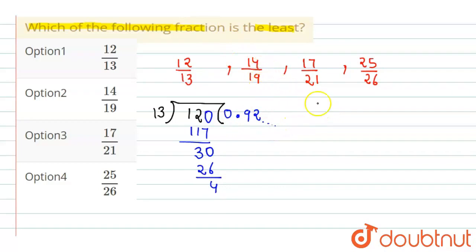The second option is 14 upon 19. Now 14 is smaller than 19, so we put the decimal point and add 0. Then 19 into 7 is 133. The remainder is 6. Then 10 minus 3 is 7. Next, 19 into 3 is 57. The remainder is 13.